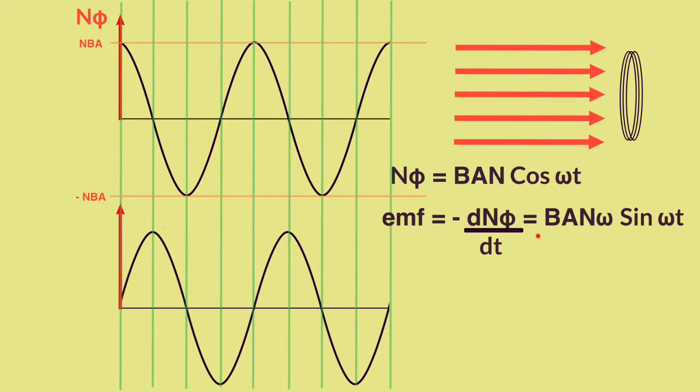So this differentiated version of the phi graph is going to be how this EMF works because it has a size of BANω and it has a shape of the sine of ωt.